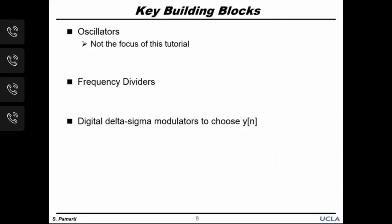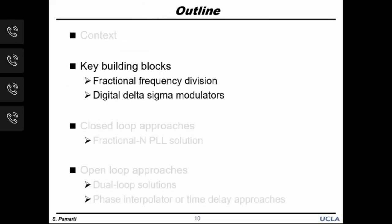You would have noticed that three building blocks are common and central to both these approaches: oscillators, frequency dividers, and digital delta-sigma modulators that choose y[n]. For each, we will discuss basic operation, obtain a simple signal-processing model, and then discuss some finer aspects. Let us start with the frequency divider.